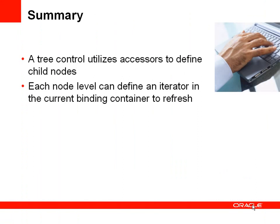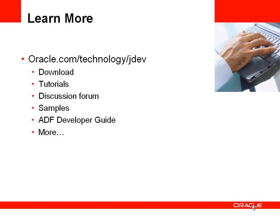To summarize, you've seen how a tree control can utilize the accessors defined on a view object to define child nodes on that tree control, and at each level of the tree control you can define which iterator should be refreshed whenever that node is selected. For more information you can go to the OTN website.